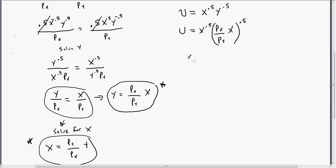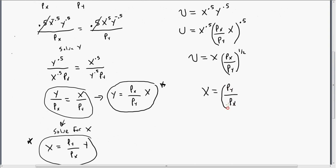Now I'm going to simplify this and solve for x. After simplification, we arrive at the expression for x in terms of utility and prices. Let me highlight that result — this gives us x as a function of u, p_x, and p_y.